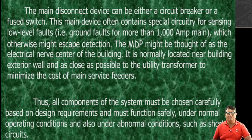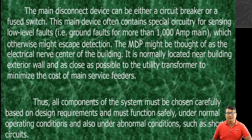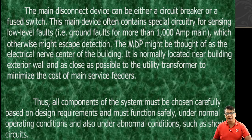The main disconnect device can be either a circuit breaker or a fuse. This main device often contains special circuitry for sensing low-level ground faults for more than 1,000 ampere mains, which might otherwise escape detection. The MDP might be thought of as the electrical nerve center of the building. It is normally located near the building exterior wall and as close as possible to the utility transformer to minimize the cost of main service feeders.